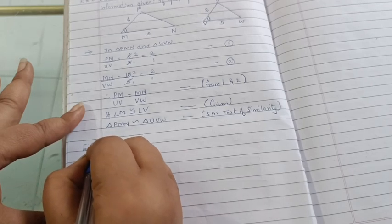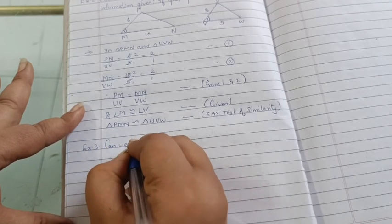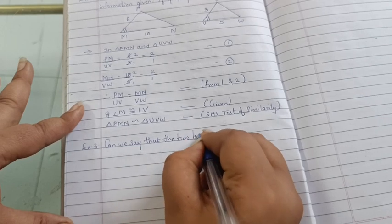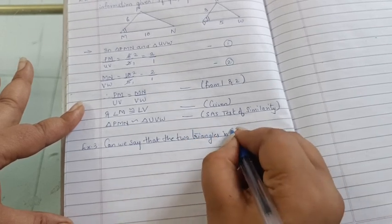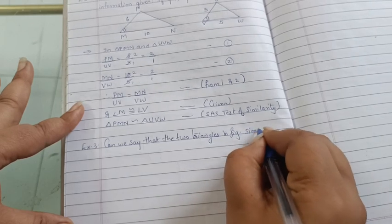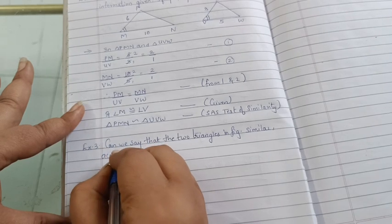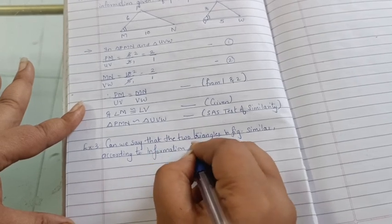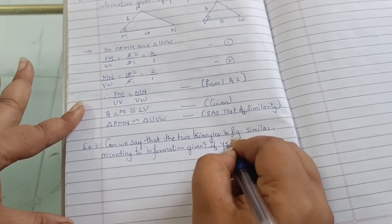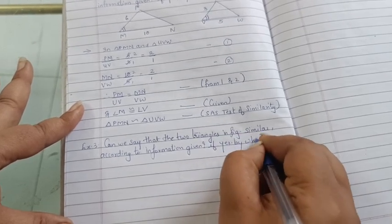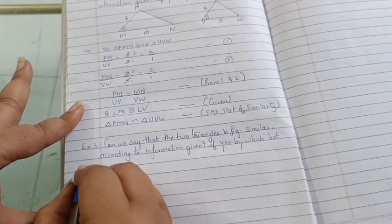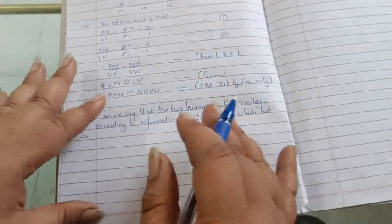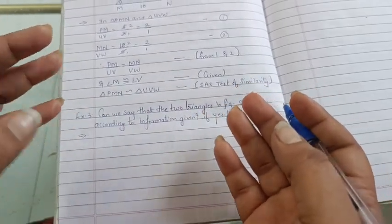Example 3: Can we say that the two triangles in the figure are similar? You have to tell whether these two triangles are similar according to the information given. If yes, by which test? Again, information is given in the figure, and you have to solve it the same way we did the previous sum. If the ratios are equal, we can determine similarity.